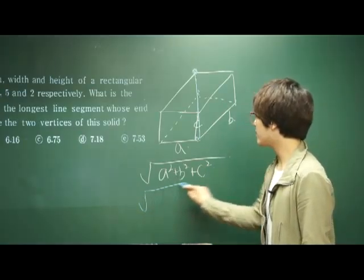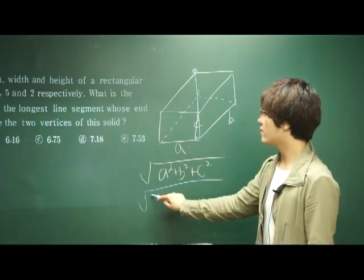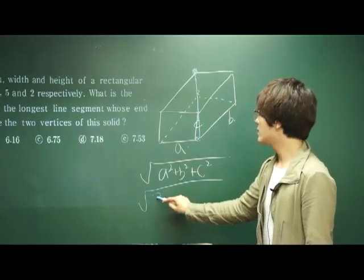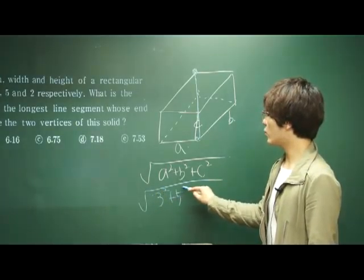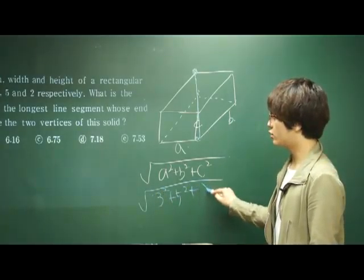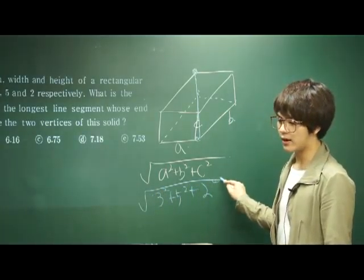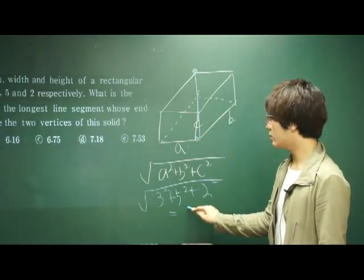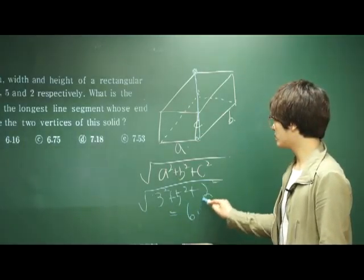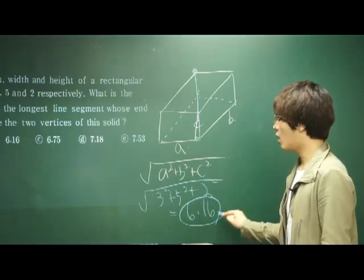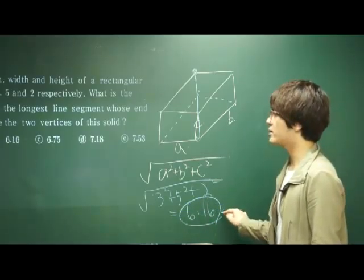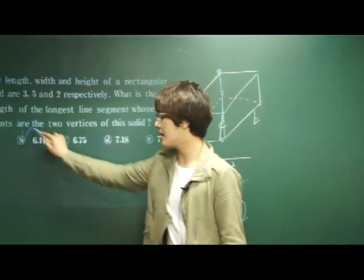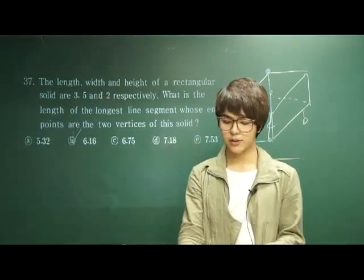In this case we are given 3, 5, and 2, so we calculate the square root of 3 squared plus 5 squared plus 2 squared, which gives us 6.16. Therefore, answer choice B — 6.16 — is the correct answer.